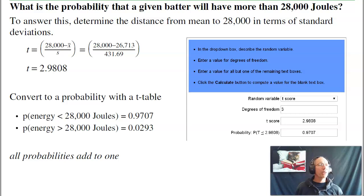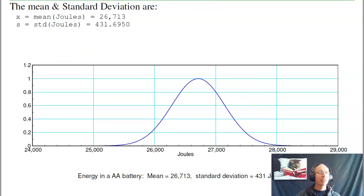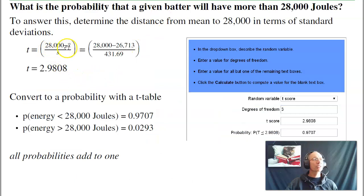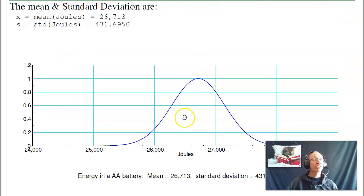Now I can answer questions. What's the probability that a given battery has more than 28,000 joules? I find the t-score: the distance from 28,000 to the mean in standard deviations — that's 2.98. Going to StatTrek with three degrees of freedom and a t-score of 2.98, the area to the left is 0.97, meaning 97%. The area to the right is 3% — so there's a 3% chance the energy is more than 28,000 joules, and a 97% chance it's less.